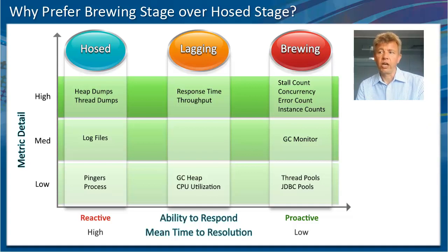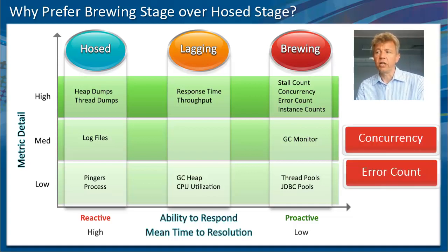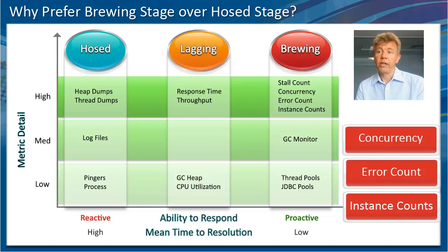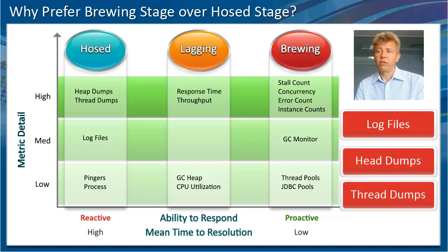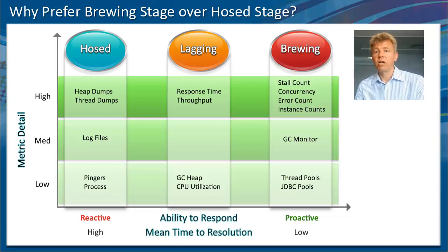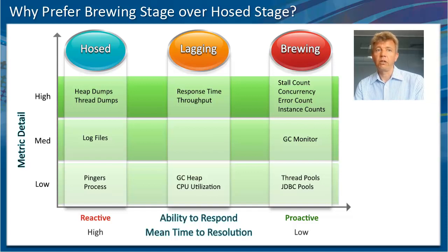Some other metrics that can also help identify issues early are concurrency, error count, and instance count. However, what we see in most organizations is that they still work in a very reactive way — looking at specific log files or thread dumps to troubleshoot and identify issues. That's really monitoring after the fact, in a reactive way.